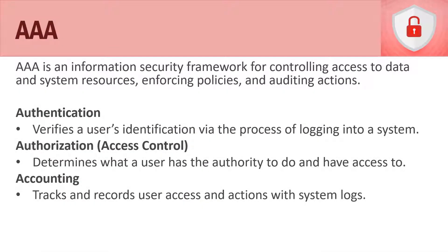In this video we're going to talk about another core information security principle commonly referred to as AAA or Triple-A. This refers to authentication, authorization, and accounting — an information security framework for controlling access to data and system resources on our computers and networks, by enforcing policies such as access control policies and auditing user and system actions.